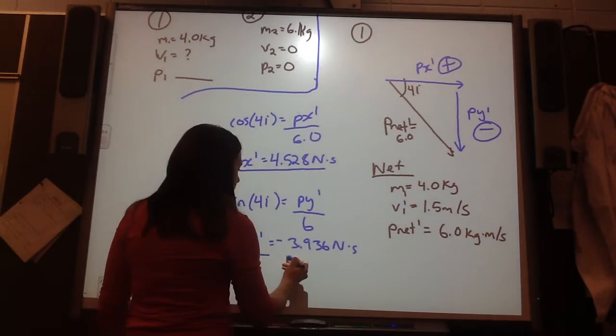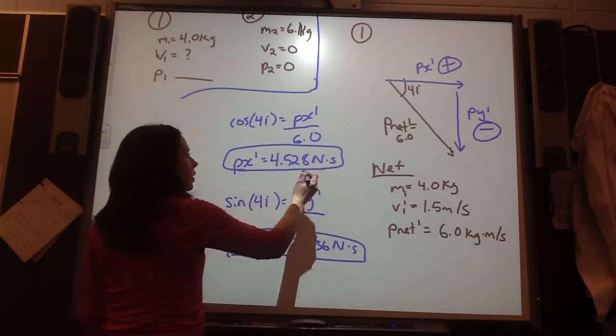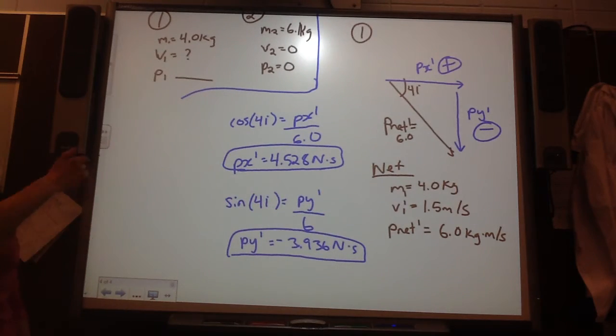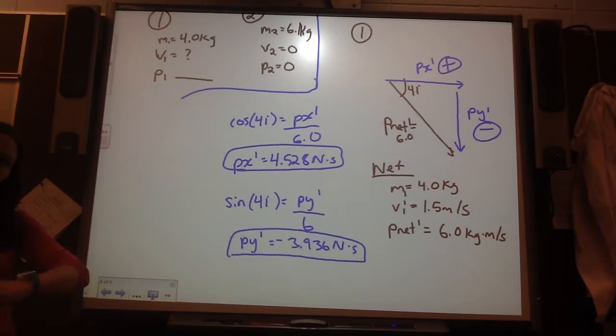So, once I find these I kind of, I like to box them or just underline these ones because these are what I really need to figure out. Okay. So, that was for object 1. Now, we have to do object 2 as well.